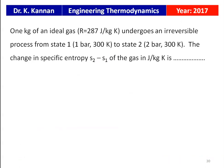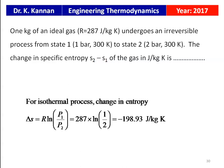From the 2017 question paper: 1 kg of an ideal gas (R = 287 J/kgK) undergoes an irreversible process from state 1 (1 bar, 300 K) to state 2 (2 bar, 300 K). Temperature is constant, so it is an isothermal process. ΔS = R·ln(P1/P2) = 287 × ln(1/2) = −198.93 J/kgK.